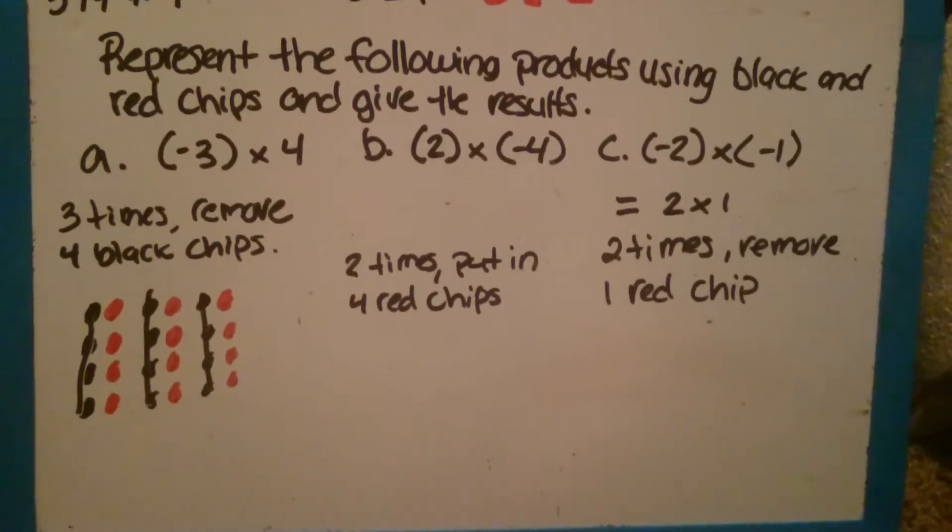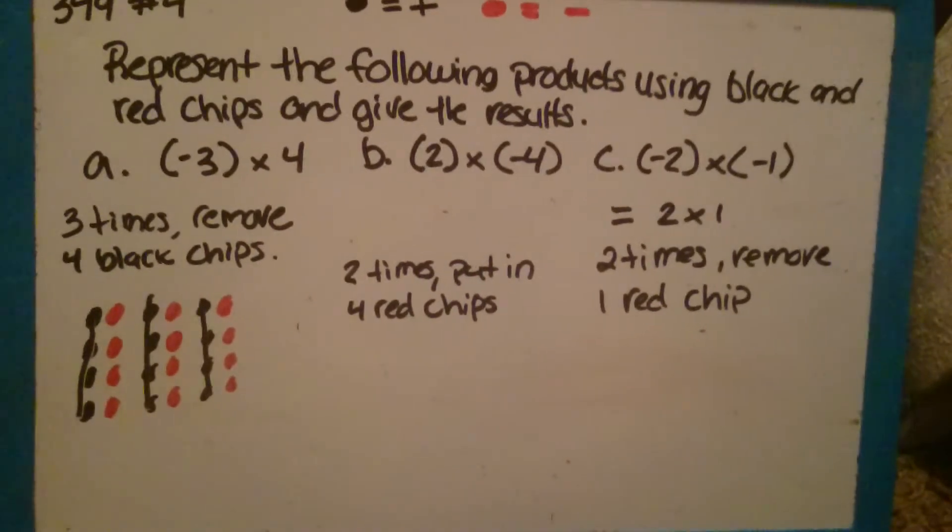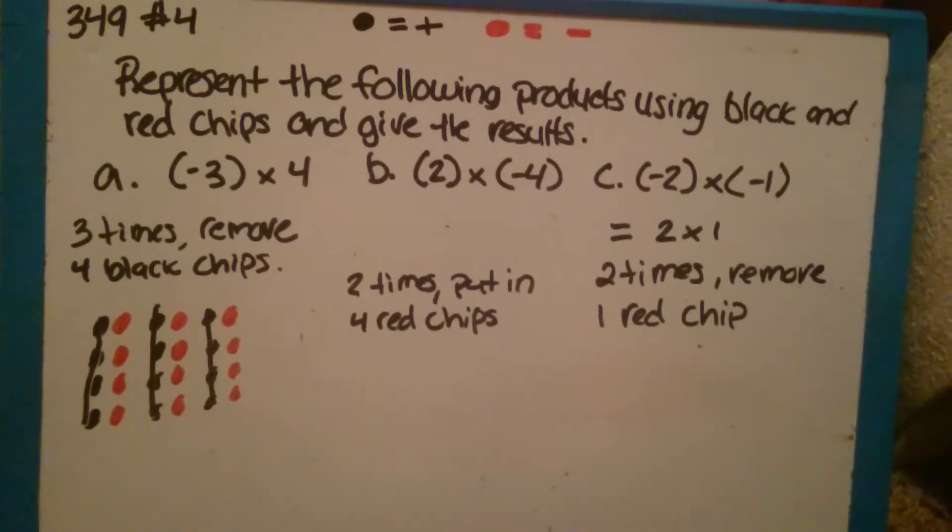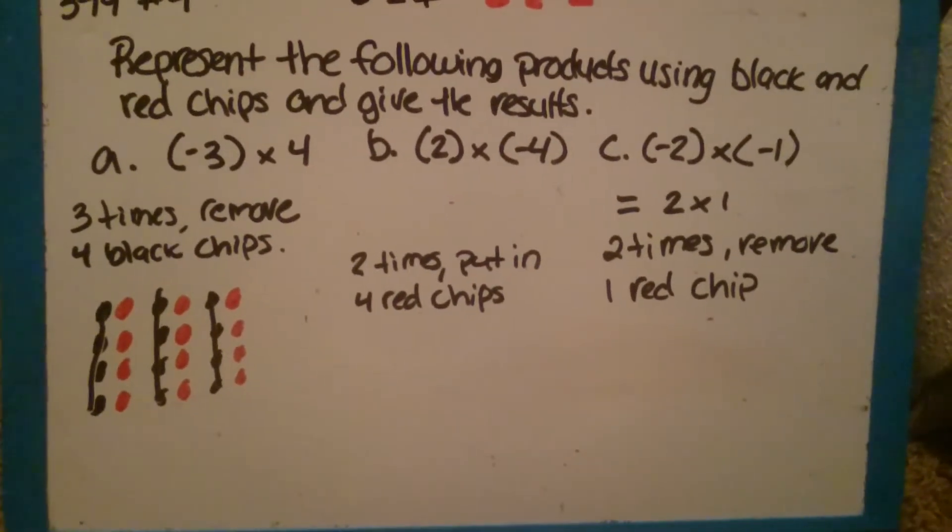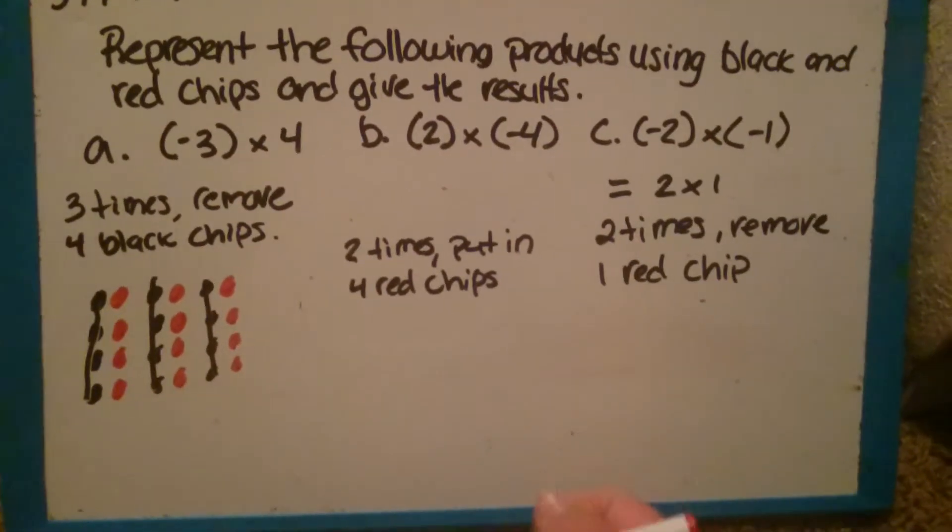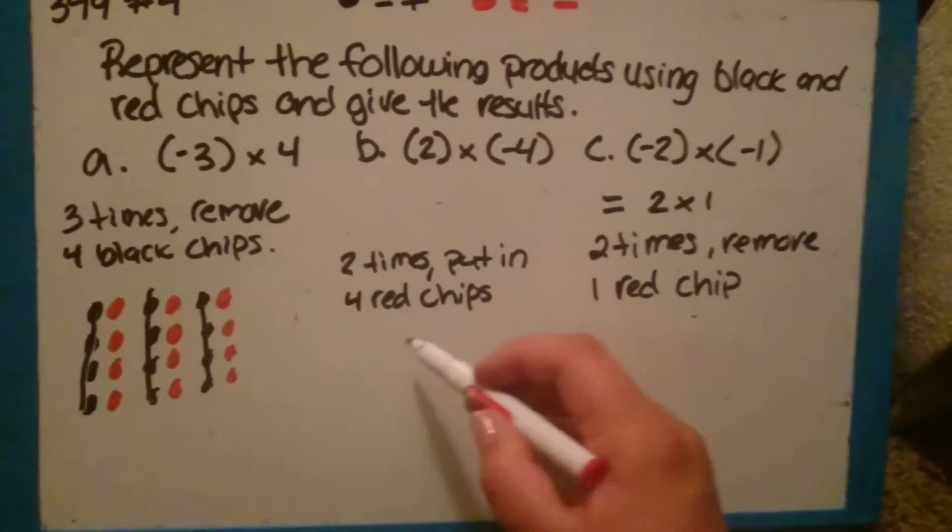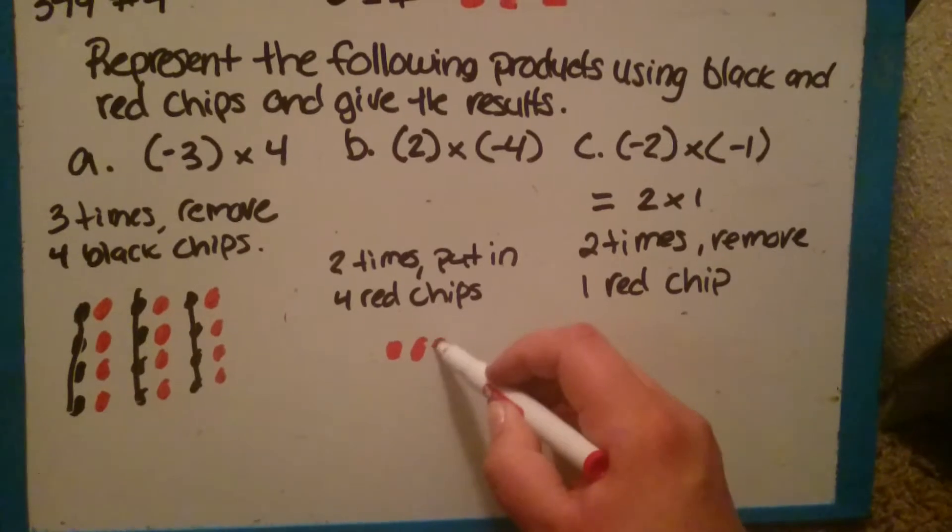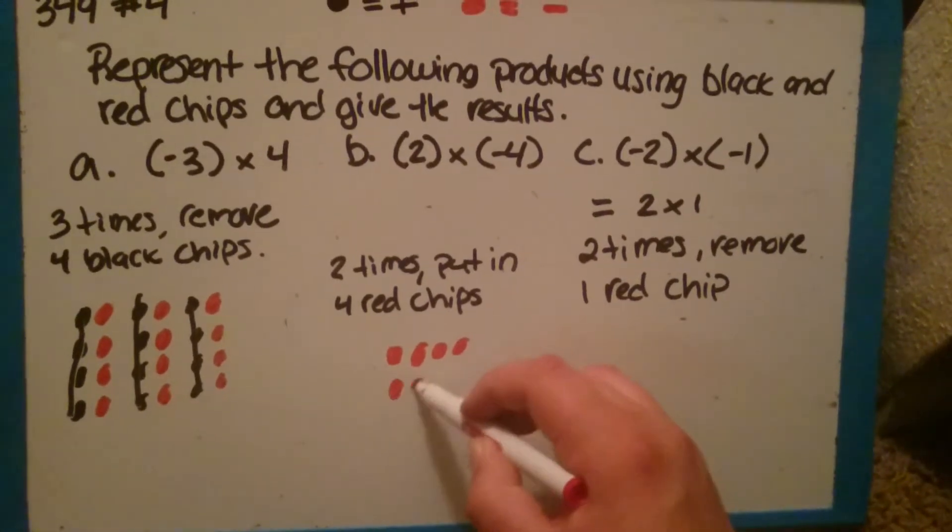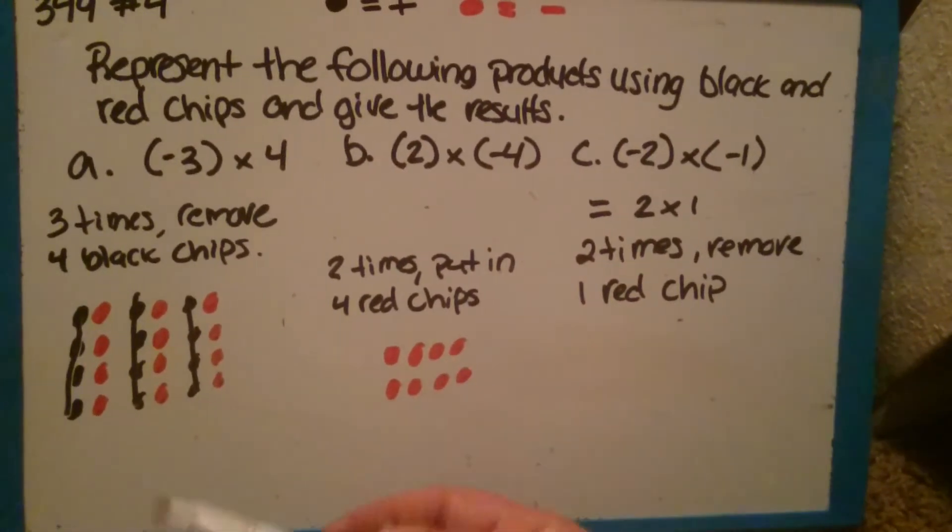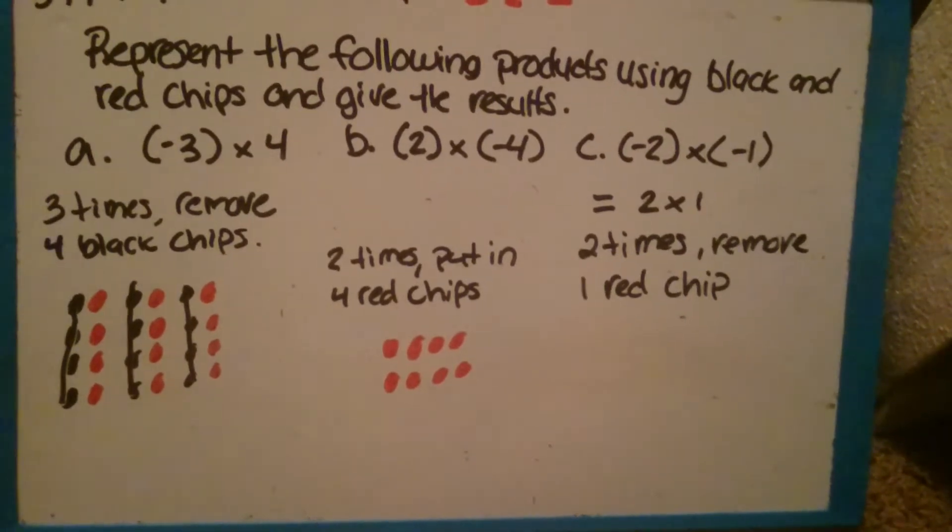For Part B, the question says 2 times put in 4 red chips. Now since we don't have red or black chips in this problem, we can just put in 2 groups of 4. So 1, 2, 3, 4. 1, 2, 3, 4. Since it's red chips, we're going to do the red and we end up with negative 8.